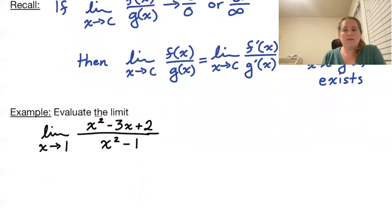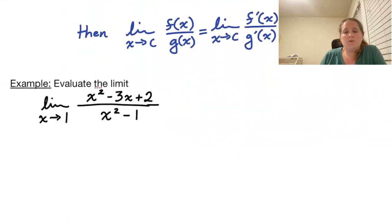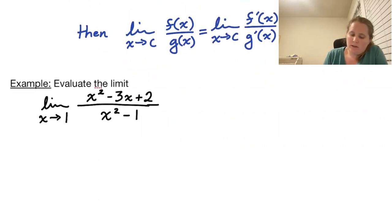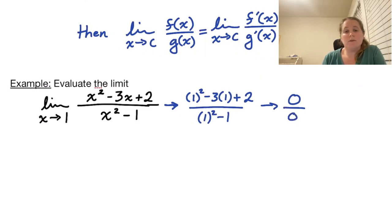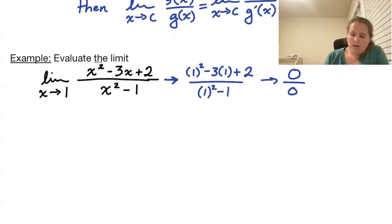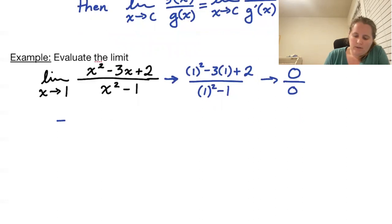For example, if we want to take the limit as x approaches 1 of (x² - 3x + 2) over (x² - 1): if we plug in 1, we get 1 - 3 + 2 = 0 on top, and 1 - 1 = 0 on the bottom. We have a 0/0 situation. So we take the derivative of the top and the bottom.